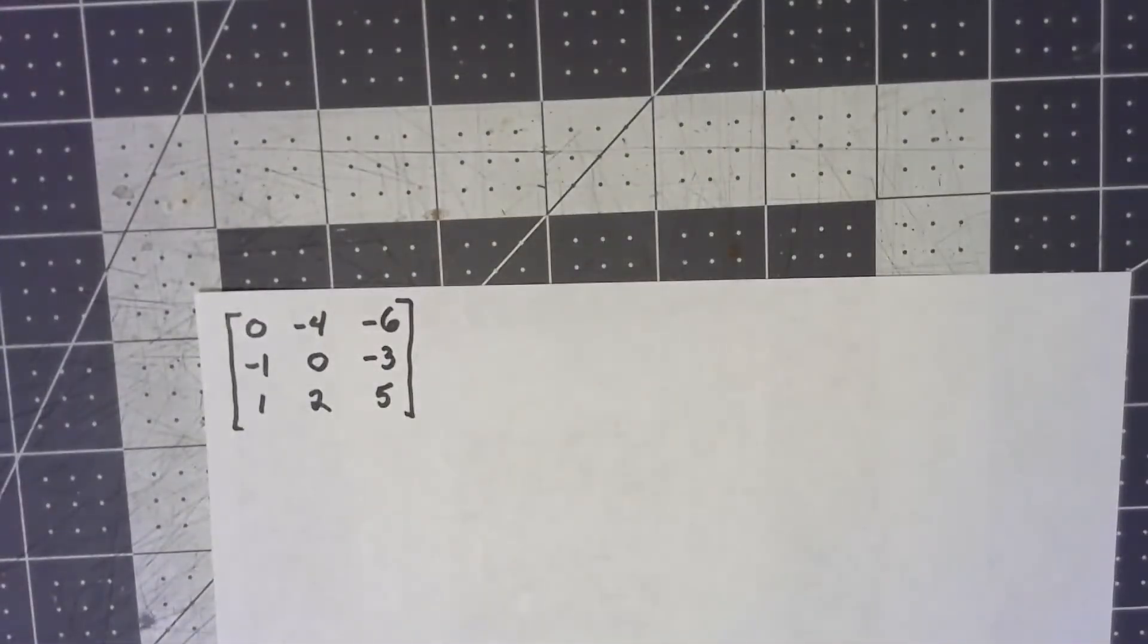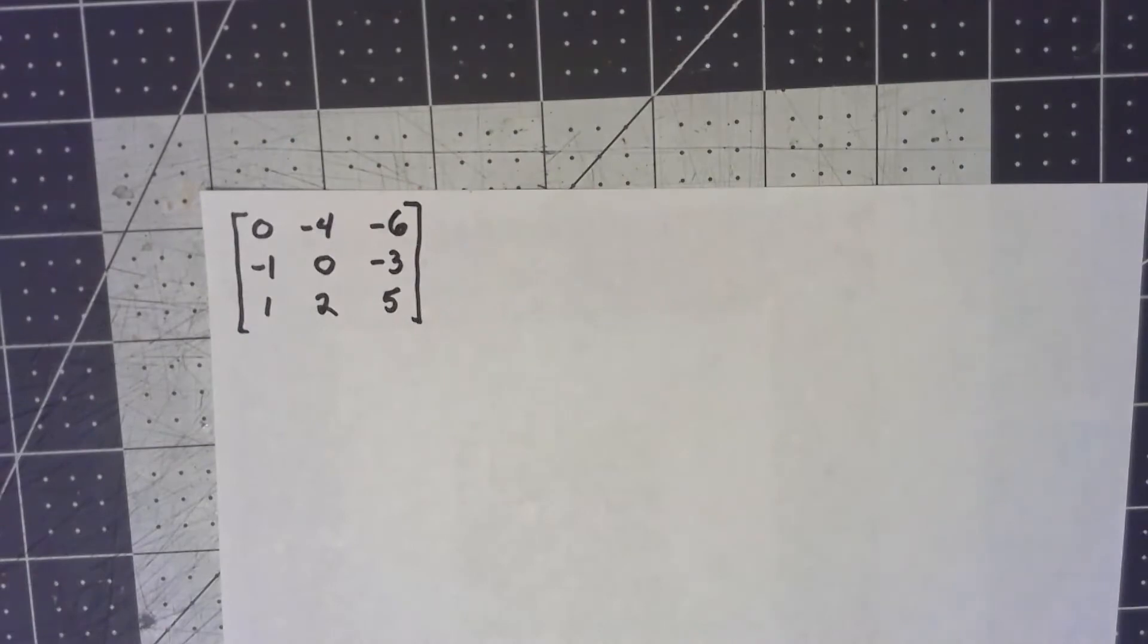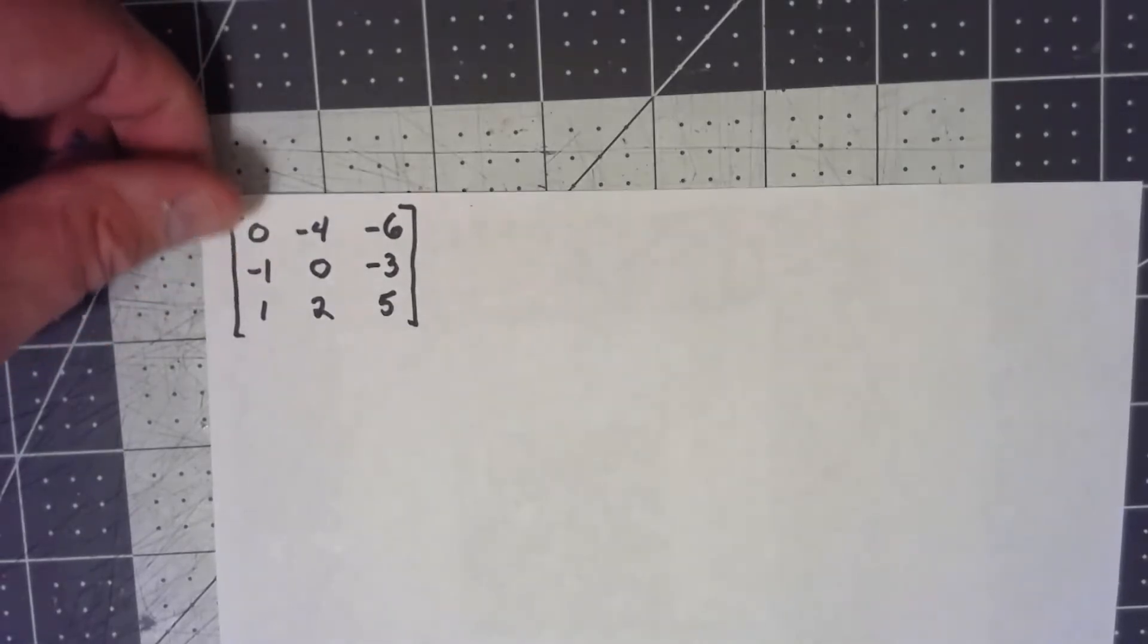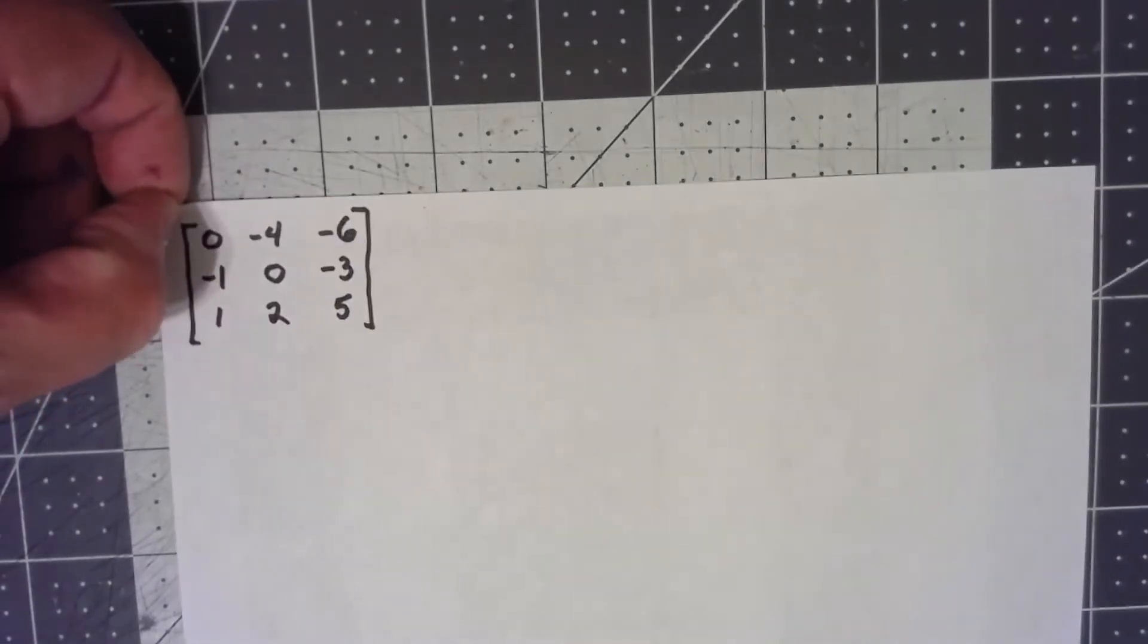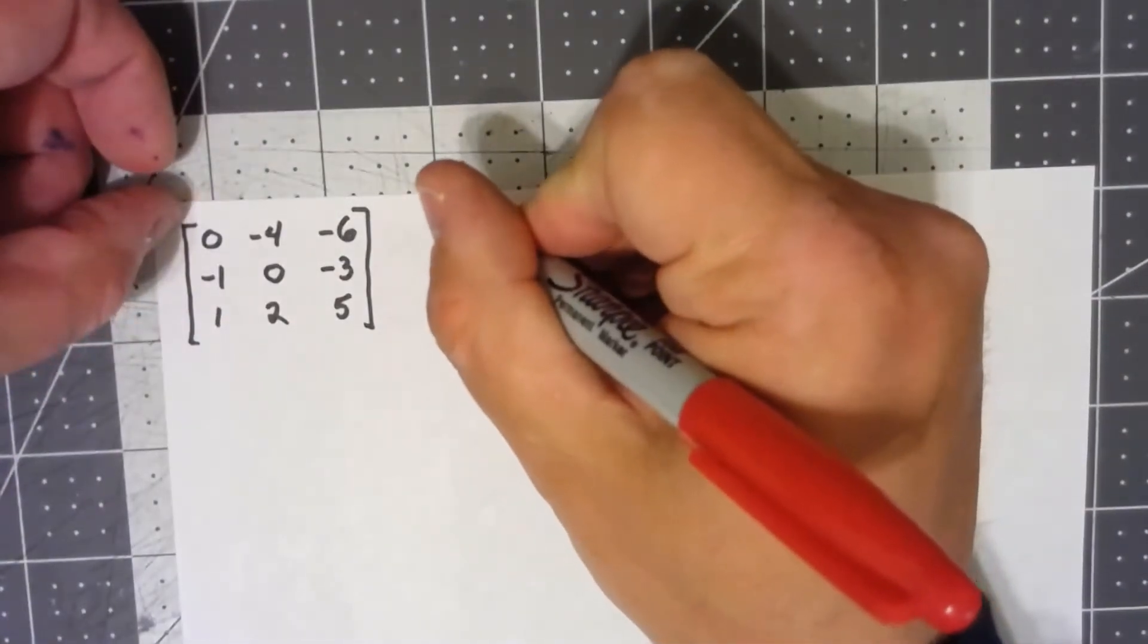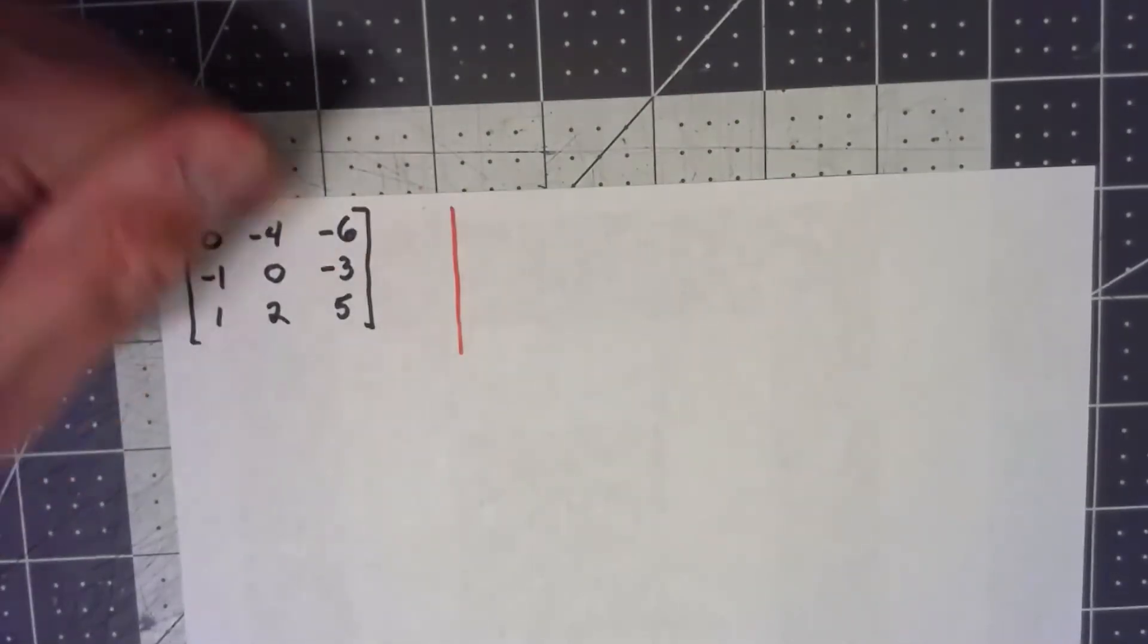I thought about doing just a two by two that was diagonalizable, but then decided that was a little bit too easy, a little bit too trivial. So let's jump immediately into a three by three. Now doing a three by three is certainly a lot more work, and I'm going to skip a couple of the steps and leave them for you to figure out when they get a little bit tedious to do here in a video.